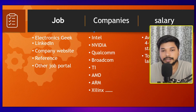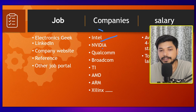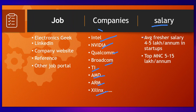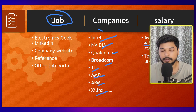Here are the companies you can work for: Intel, NVIDIA, Qualcomm, Broadcom, TI (Texas Instruments), AMD, ARM, Marvell, and many other MNCs. An average fresher with a B.Tech in ECE can get around 4 to 5 lakh per annum at a startup or service-based company. At a product-based company, freshers can expect 5 to 15 lakh per annum, and with 1–2 years of experience you can get 20 to 25 lakh per annum.